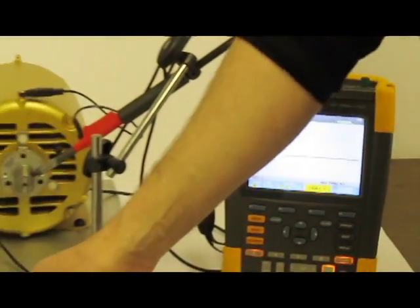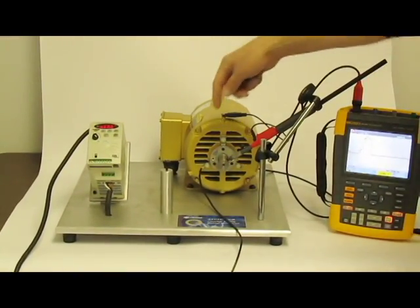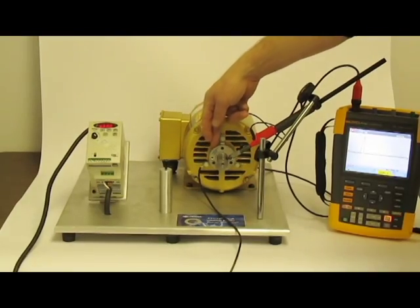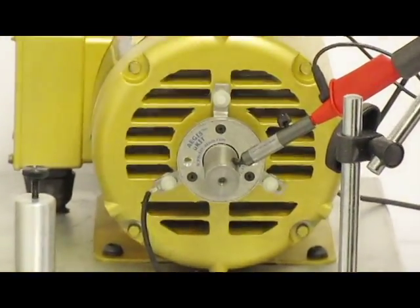In this demonstration we have a motor operated by a variable frequency drive. We have a Shaft Grounding Ring that is connected to the motor, insulated from the motor.